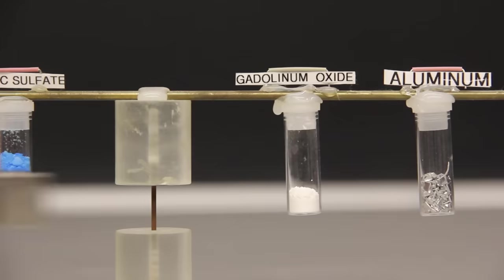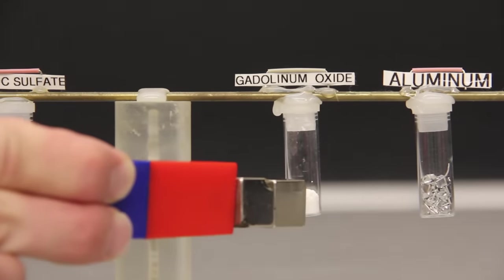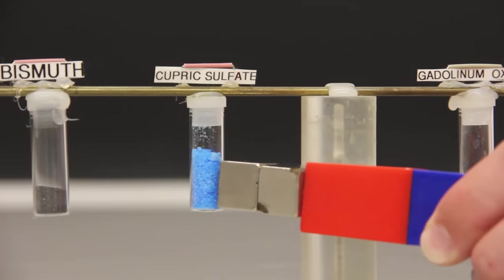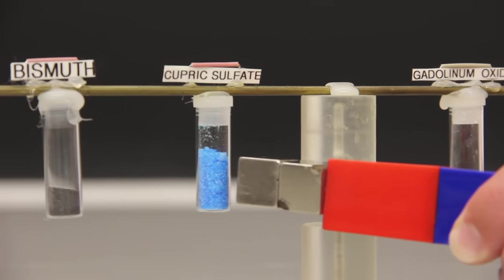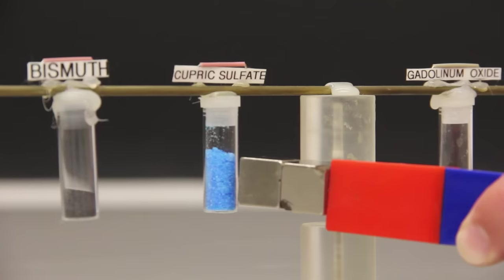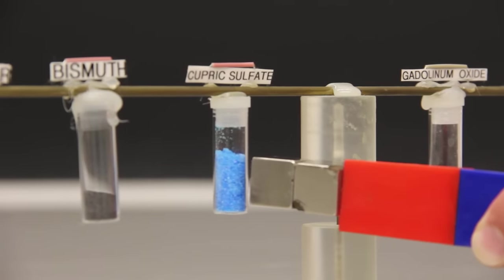Here, I have a few milliliters of liquid oxygen, which sticks to the magnet. I'll explain why later. Gadolinium oxide and cupric sulfate are good examples of paramagnetic substances. Cupric sulfate is a salt that can be picked up by a magnet.